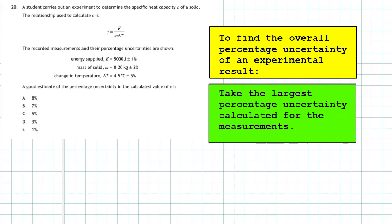Our final answer for the specific heat capacity will be a value plus or minus 5 percent. The good estimate is 5 percent. The 8 percent is to throw you off - you don't just add up all the percentages. To find the overall percentage uncertainty of an experimental result, you take the largest percentage uncertainty calculated for the measurements.